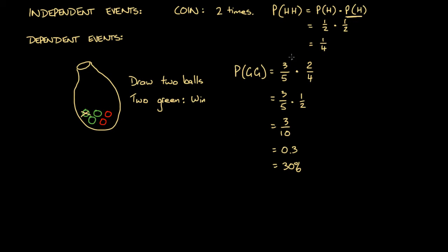What's interesting about this example is that the second probability is two over four, not three over five. This second probability of drawing a green ball from the bag is dependent on the outcome of the first event. For instance, if we had picked out a red ball on our first try, the probability of picking out a green ball would be different.